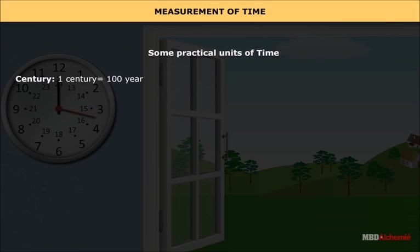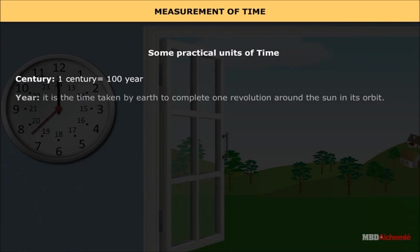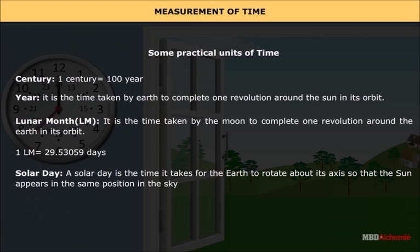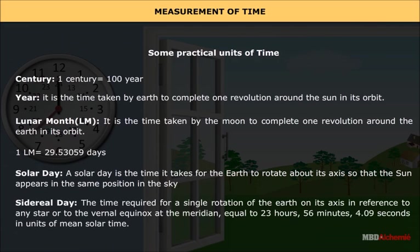Some practical units of time. Century: one century equals 100 years. Year: it is the time taken by Earth to complete one revolution around the sun in its orbit. Lunar month (LM): it is the time taken by the moon to complete one revolution around the Earth in its orbit. One LM equals 29.53059 days. Solar day: a solar day is the time it takes for the Earth to rotate about its axis so that the sun appears in the same position in the sky. The time required for a single rotation of the Earth on its axis in reference to any star or to the vernal equinox at the meridian equals 23 hours, 56 minutes, 4.09 seconds in units of mean solar time.